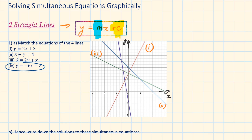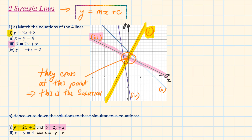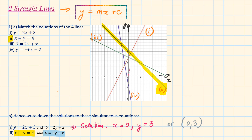Finally, the last one has a y-intercept of minus 2, and there is only one line that crosses the y-axis at minus 2. Part b: Hence, write the solution to these simultaneous equations. The two lines highlighted in yellow and pink cross at this point — the solution is x equals 0 and y equals 3, or as a coordinate point, (0, 3). The second part, for the lines highlighted in yellow and blue, the solution is x equals 2 and y equals 2.